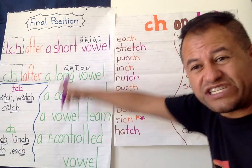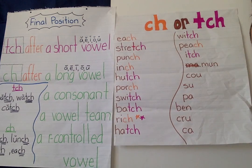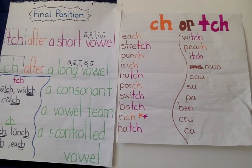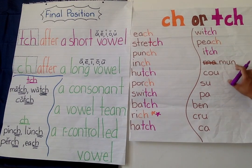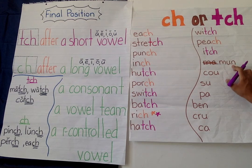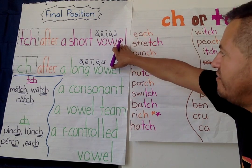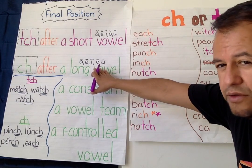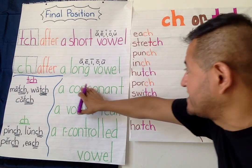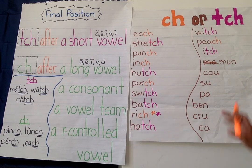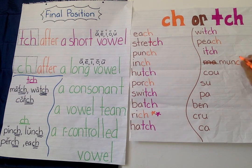I'm still using my chart to help me in case I forget. M-U-N — "munch." My last letter is an N. Is it a short vowel? Nope. Is it a long vowel? Nope. Is it a consonant? Yes — so if it's a consonant, it's going to be C-H. "Munch." The hungry caterpillar will munch through the apple.